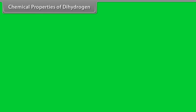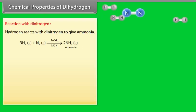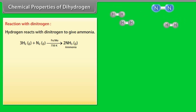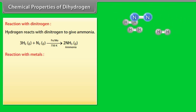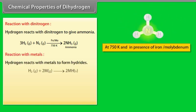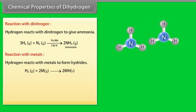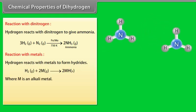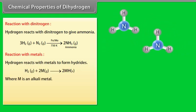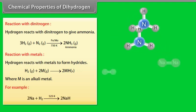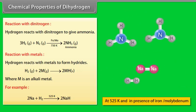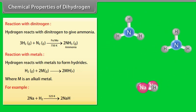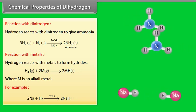Chemical properties of dihydrogen. Reaction with dinitrogen: Hydrogen reacts with dinitrogen to give ammonia. Reaction with metals: Hydrogen reacts with metals to form hydrides, where M is an alkali metal. For example, 2Na plus H2 on temperature 525 Kelvin gives 2NaH.